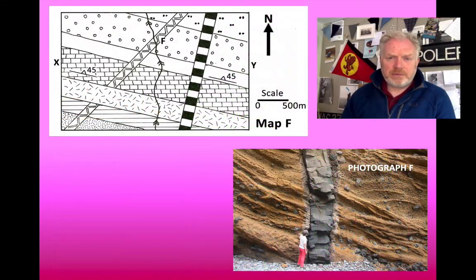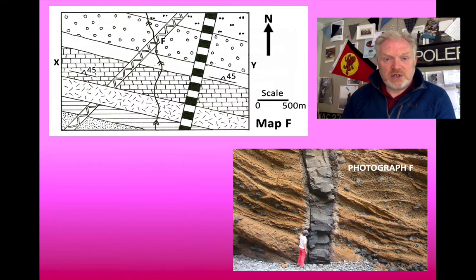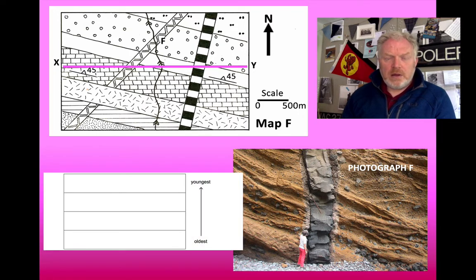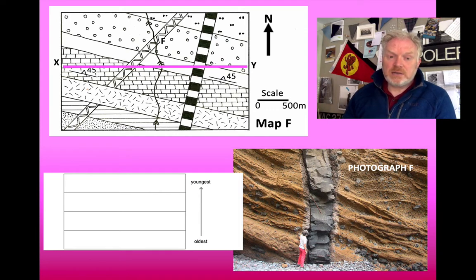This is Map F. We also have Photograph F, taken at the location indicated on the map. There are a number of questions for you to have a go at — remember to use the key to help you identify which rock is which. The cross-section goes from X to Y. We also need to think about the age relationships of these, using relative dating and, in particular for igneous intrusions, cross-cutting relationships. Now it's time for you to have a go at those questions.